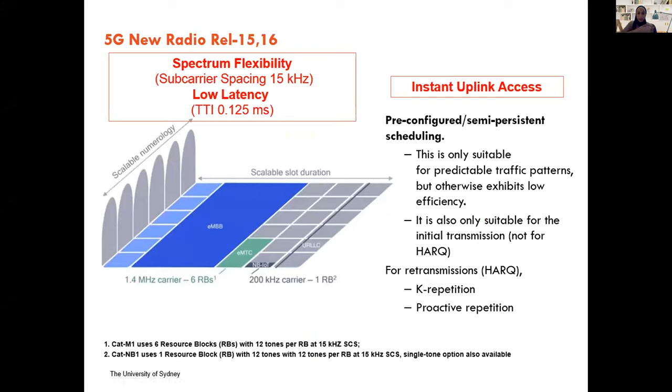So what has been done in 5G to address this? Address obviously the spectrum flexibility. We have more granular sub-carrier spacings: 15, 30, 60, 120.